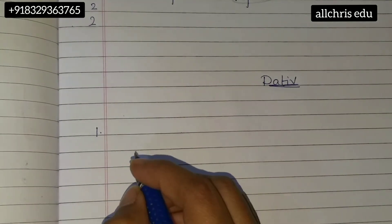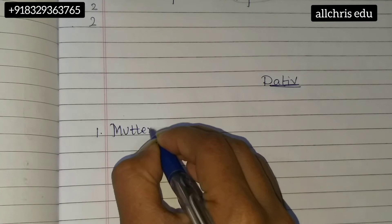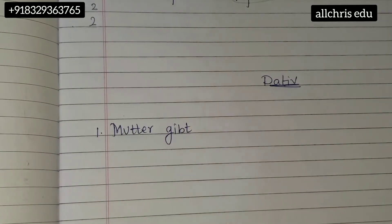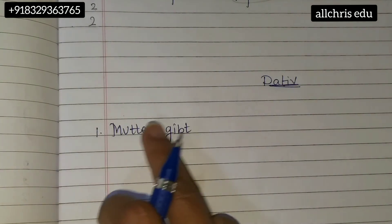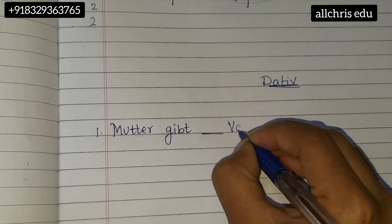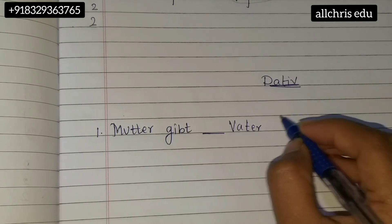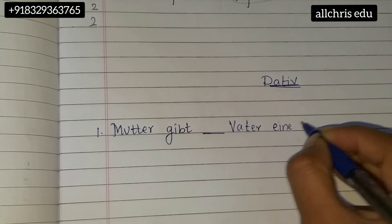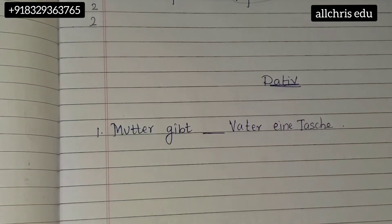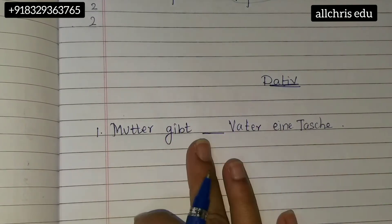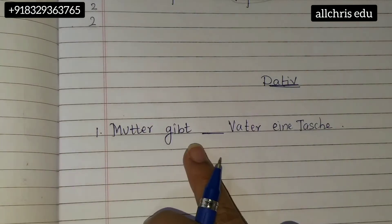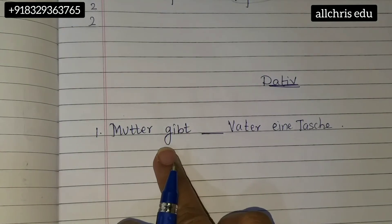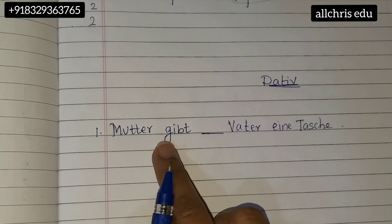I will show you an example. Mutter — gift — 'gift' means to give — Geben, G-E-B-E-N. We have seen this verb in vocal verb rules. So: Mutter gift dash Vater dash Tasche. Mother is giving father a bag. In this sentence, you need to know first what is happening. The action of giving is happening. So who is giving? Whom are we giving something? Who is receiving it? And what are we giving?